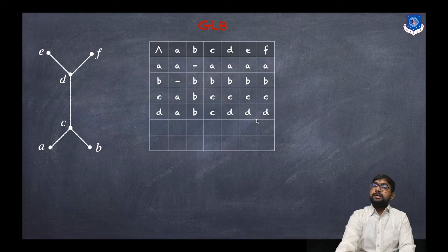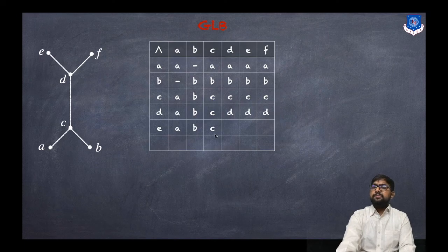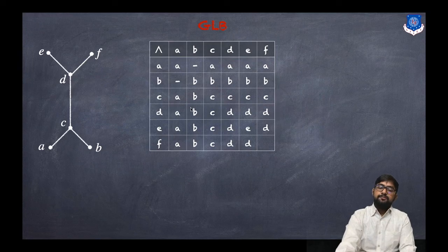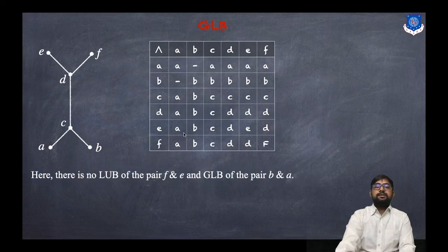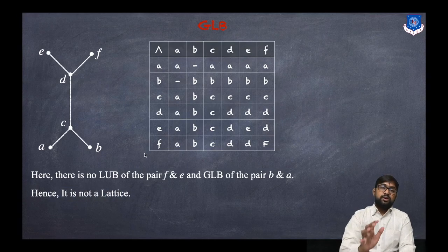For row e: GLB(e, a) = a; GLB(e, b) = b; GLB(e, c) = c; GLB(e, d) = d; GLB(e, e) = e; GLB(e, f) = d. For row f: GLB(f, a) = a; GLB(f, b) = b; GLB(f, c) = c; GLB(f, d) = d; GLB(f, e) = d; GLB(f, f) = f. So there is no LUB for pair (e, f) and no GLB for pair (a, b), hence it is not a lattice.